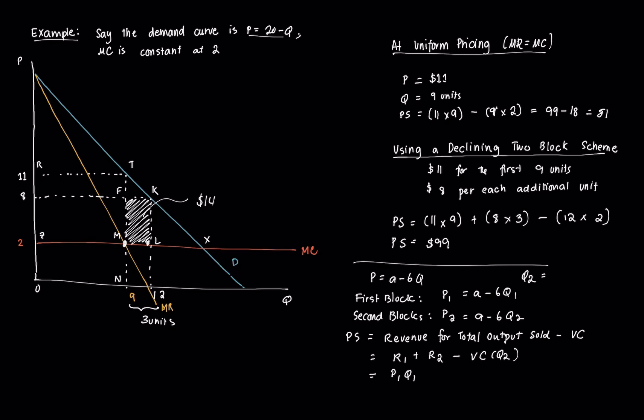So this one will be equal to, if we simplify this one, that's P1 times Q1 plus P2, then the quantity that will use the P2, which is in this case is 8, will be Q2 minus Q1. So it won't charge 8 for all the 12 units of production. It will just charge it for the three additional units, less the variable cost. And if you simplify this in terms of mathematical terms, we can derive the formula PS, which is equal to A minus BQ1 times Q1 plus A minus BQ2 times Q2 minus Q1, less the variable cost of Q2.